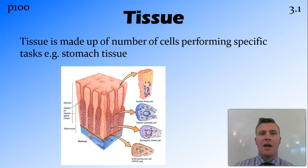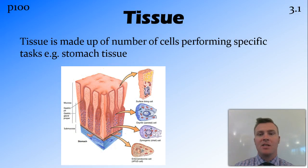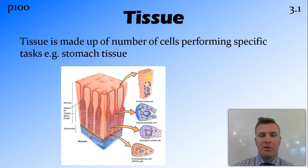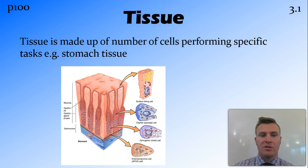Once we get a number of cells together — both the same and different cells together into a structure — we call this tissue. Here we've got a few different types of cells formed in specific spots to do a specific job, and we get stomach tissue.